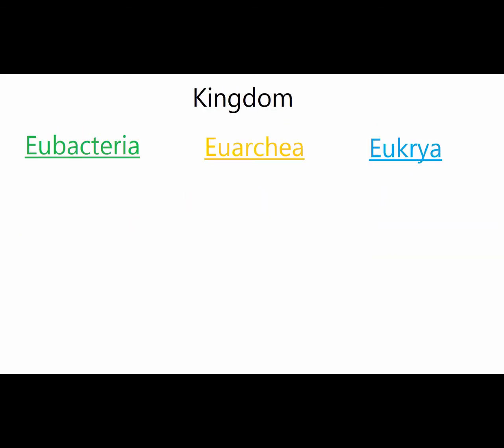These groups break down further into other groups under the taxa kingdom. Under eubacteria, you have the bacteria. Under eukarya, you have the archaea. And this is the interesting one: under eukaryotes, you have animals, plants, fungi, and the one that is so weird it should not even exist — the protist.